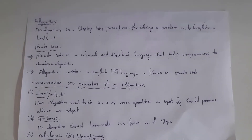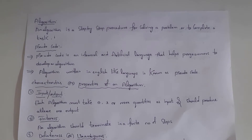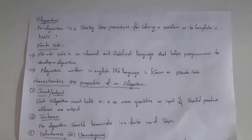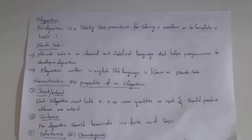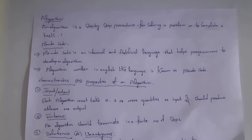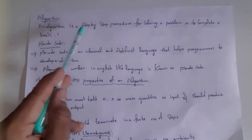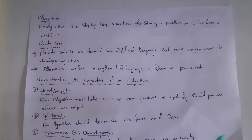You are not using algorithms only in computers — you are also using algorithms in your real life. For example, if I want to make coffee: step one, take a pan and add milk; step two, switch on the gas stove; step three, add sugar and coffee powder; step four, boil it; step five, coffee is ready. I followed a sequence of steps to complete a task — this is known as an algorithm.